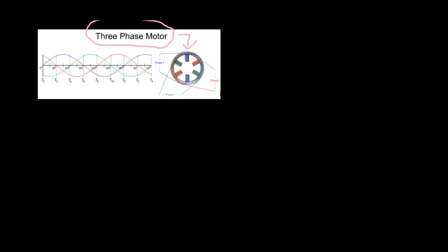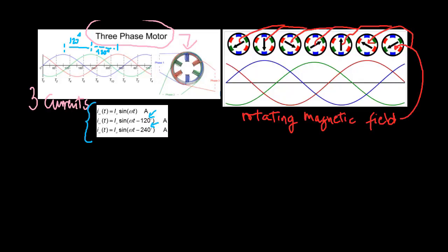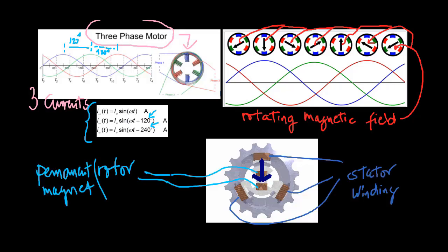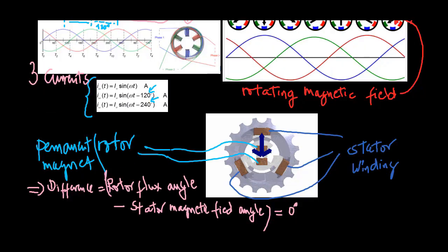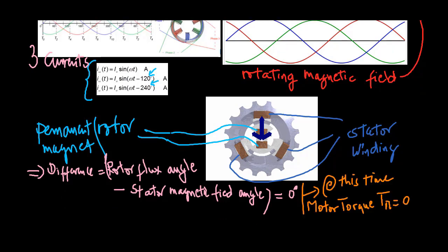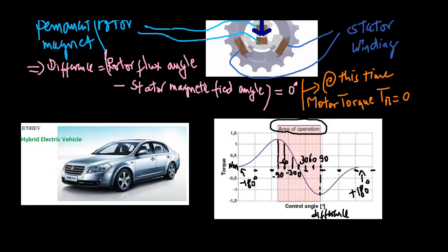This is a three-phase machine. When we put currents in these windings in such a way as to create a rotating magnetic field, and if we put a permanent magnet rotor inside of the stator, the rotor tries to follow that rotating magnetic field of the stator perfectly. In this case the motor torque is zero. If we load the motor, this difference will be different from zero.